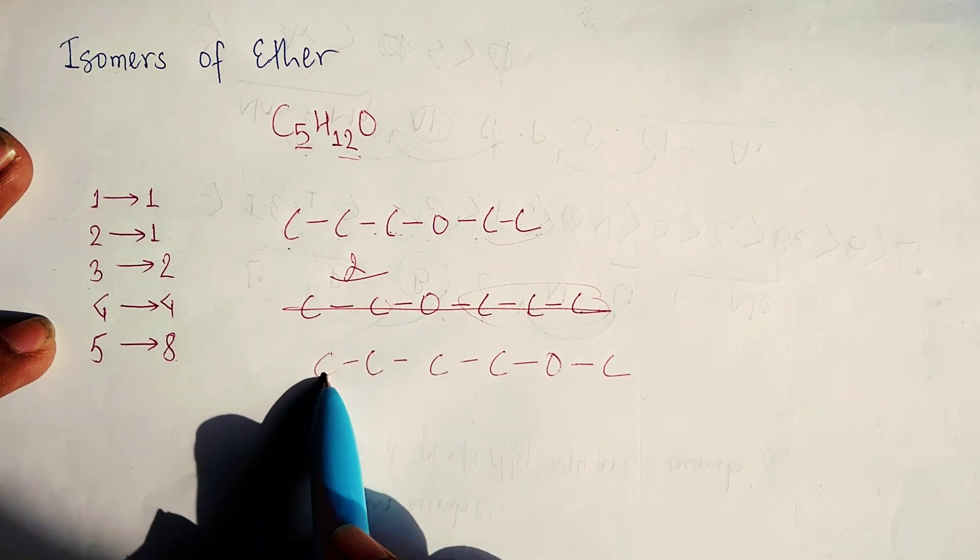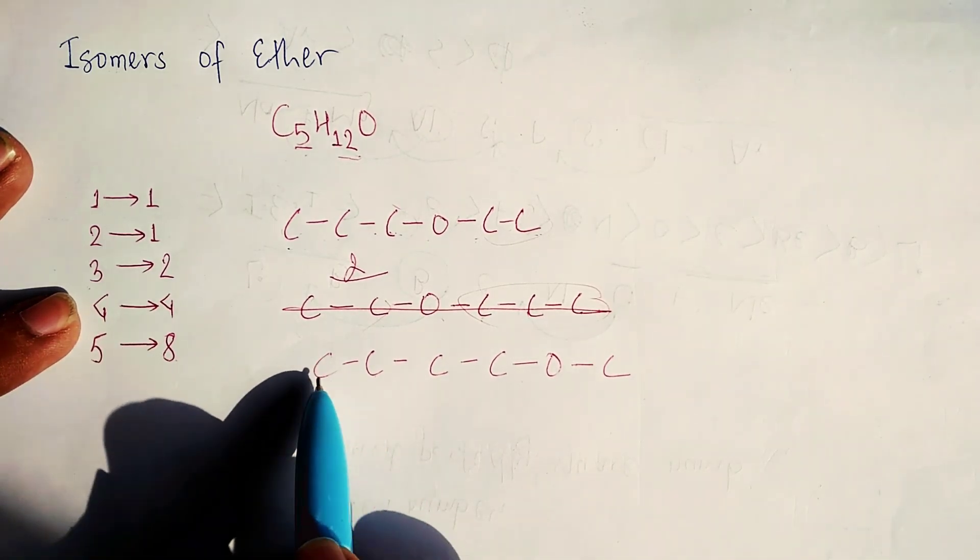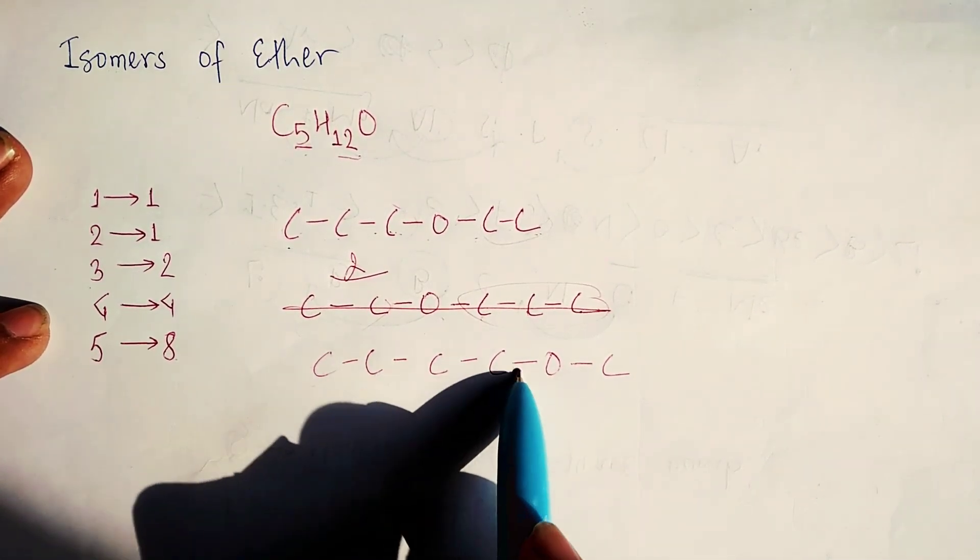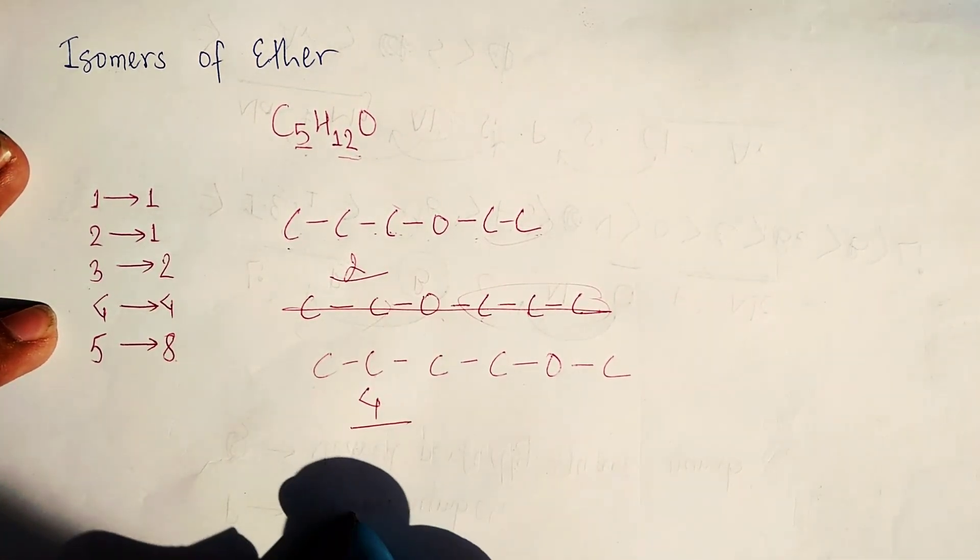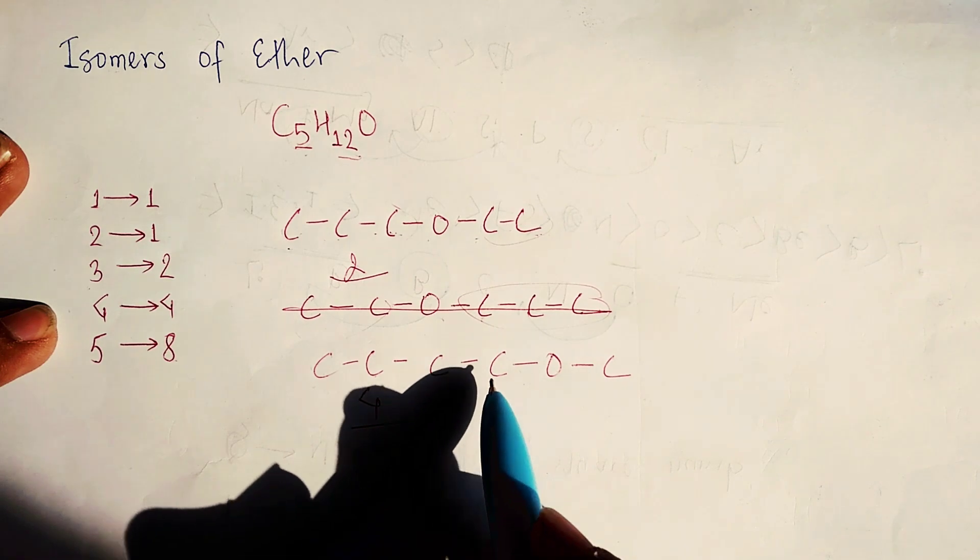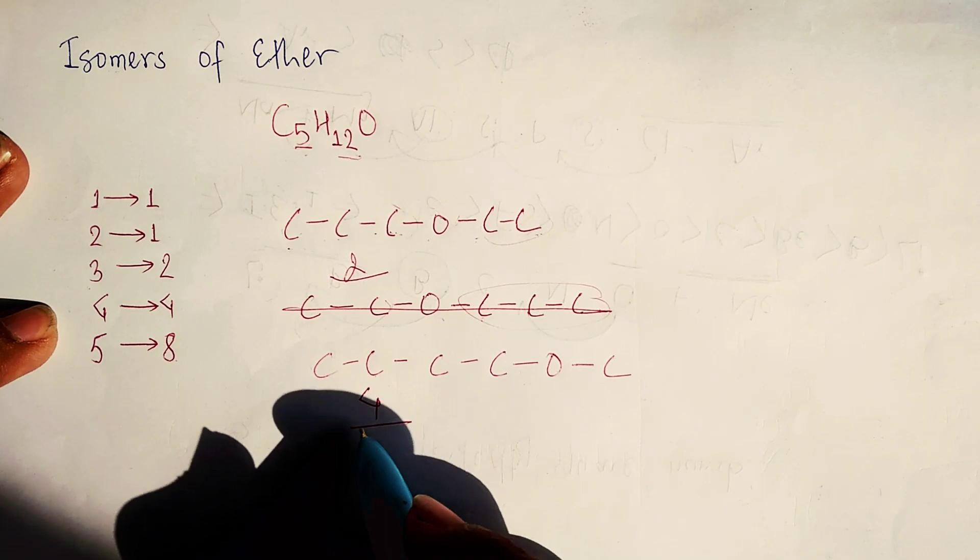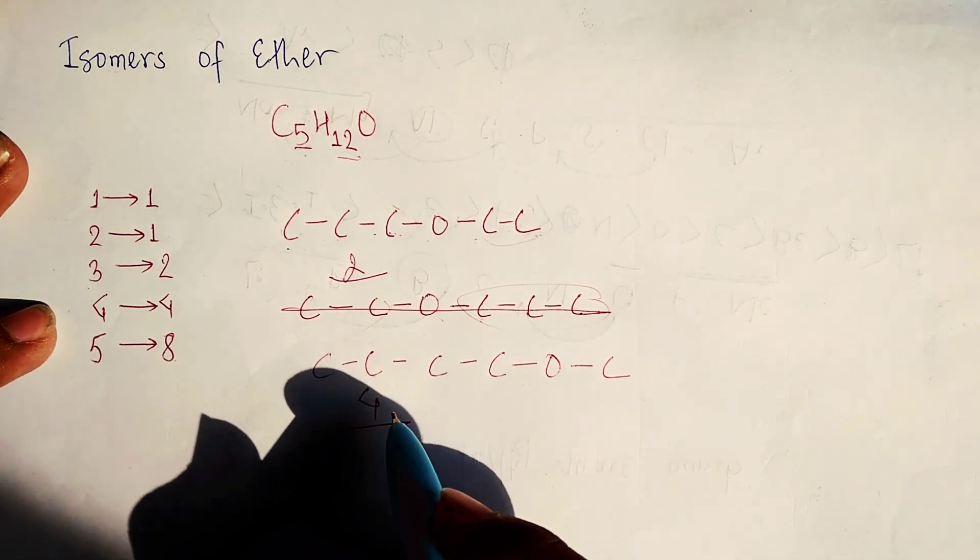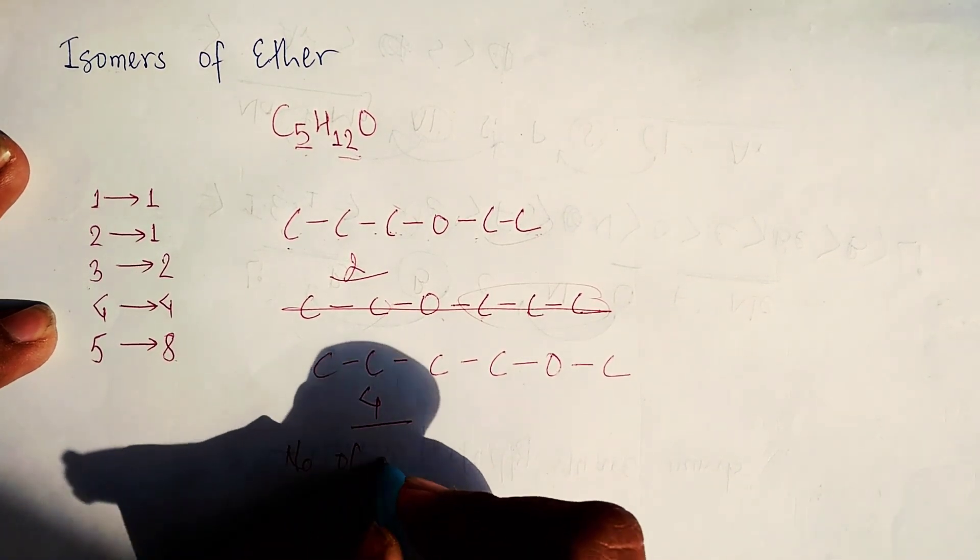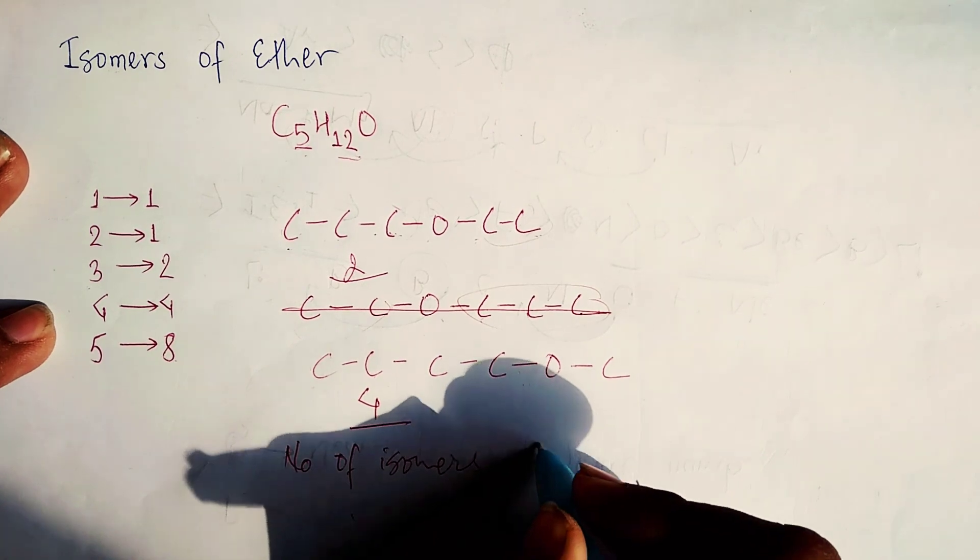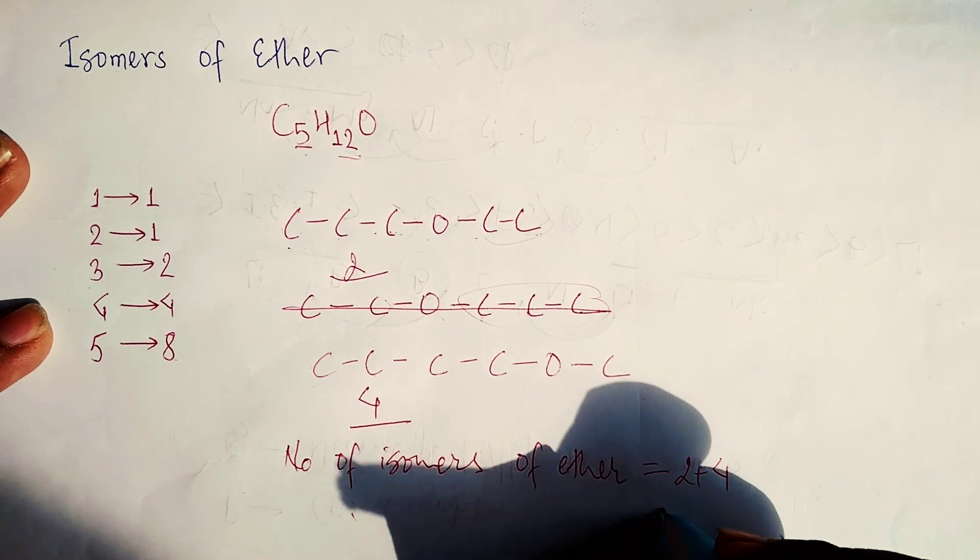Now we will take the number of carbons and put in the formula: 1, 2, 3, 4 - this means 4. Can you think of any other forms now? No, we cannot make any other forms. This is the required answer. The number of isomers of ether is equal to 2 plus 4, which equals 6.